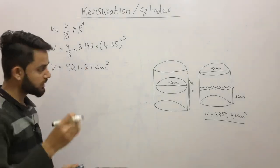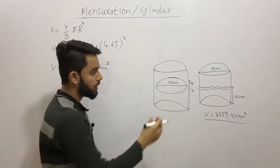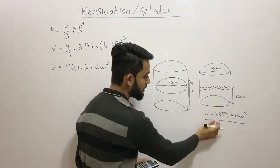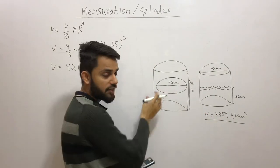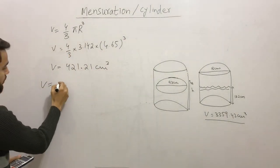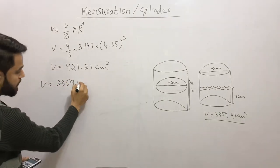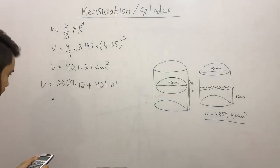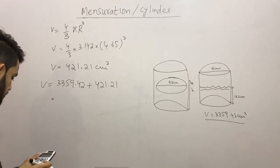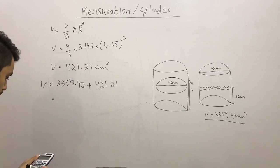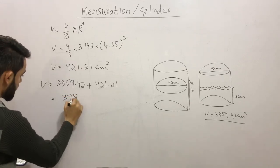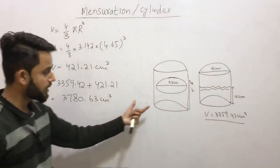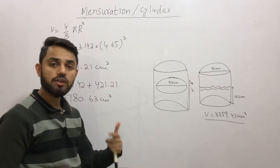Once we drop the spherical ball bearing into the cylinder, the water level increases. The original volume of water plus the volume of the spherical ball merge together. So the total volume is 3359.42 + 421.21 = 3780.63 cubic centimeters. That is the new total volume of water with the spherical ball bearing inside.